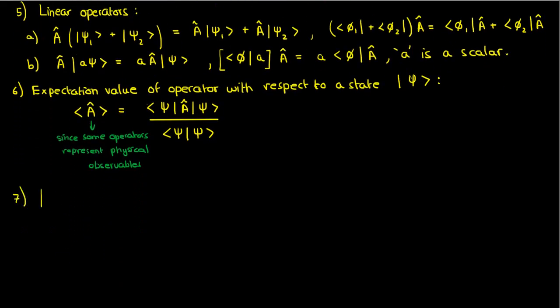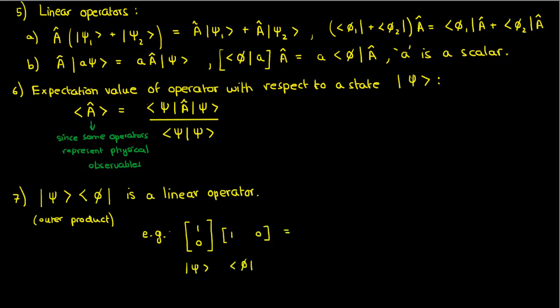The last property is that this ket bra product, also known as the outer product, is also an operator. In fact, you can show yourself that it's a linear operator. For instance, in a finite dimensional space like R2 or C2, the ket psi would be a column vector and the bra phi would be a row vector. And a column vector times a row vector, as you know, is a matrix, which, as we said earlier, is a lot like an operator.